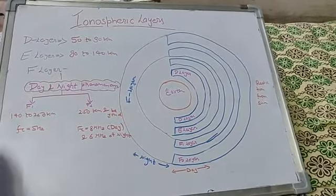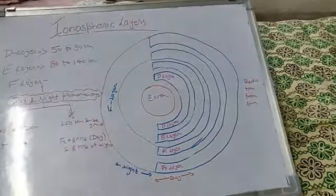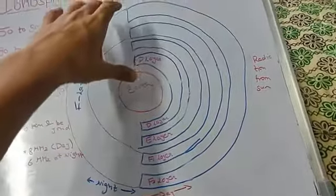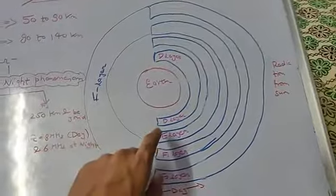Ionospheric layers. Here, as you can see, this is Earth and this whole is the total atmosphere which can be divided into layers.